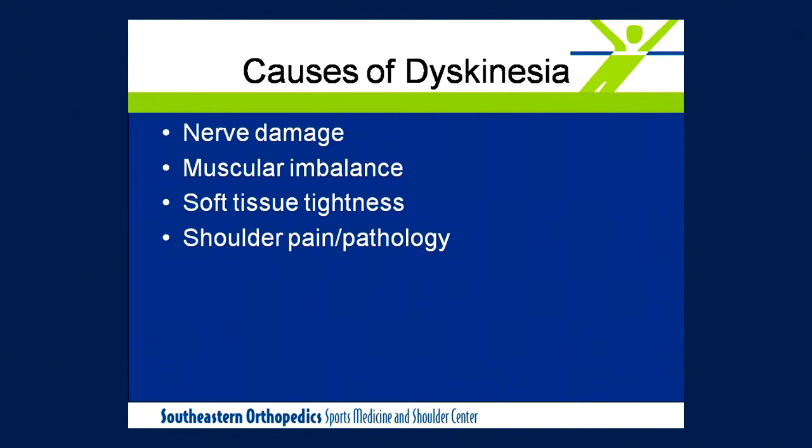There are many different causes for scapular dyskinesis. Nerve damage, which can cause muscular weakness, can disrupt the force couples around the periscapular muscles. Then muscle imbalance with weaknesses or overactivity, soft tissue tightness, and then also various shoulder pathologies.